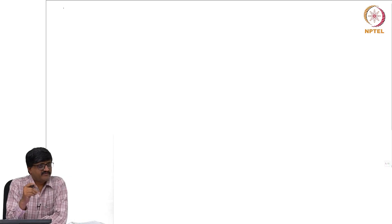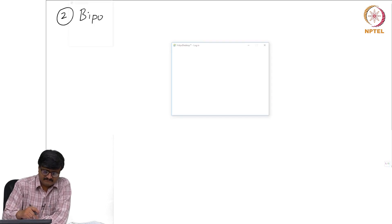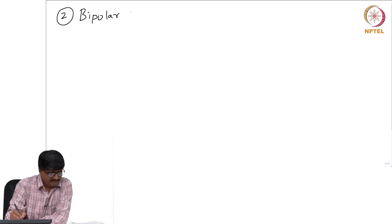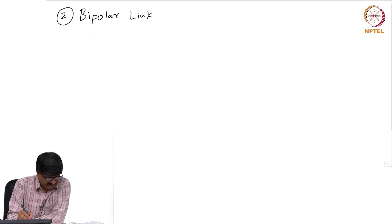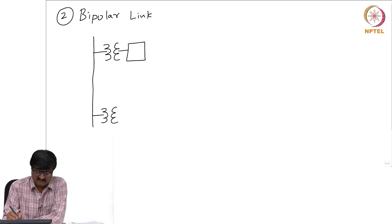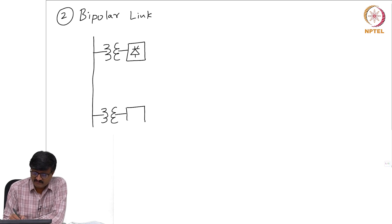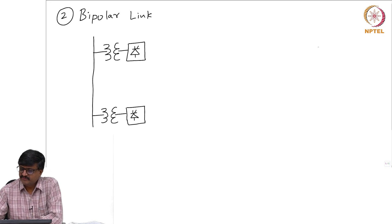We are trying to see what are the different possible DC links. We have seen monopolar; the second type of DC link is bipolar. I will try to draw a schematic diagram — it is not a circuit diagram. A transformer shown in the figure and a box with a thyristor actually represents a 12-pulse converter. This is on one side. There are two sides: one is rectifier, the other is inverter.